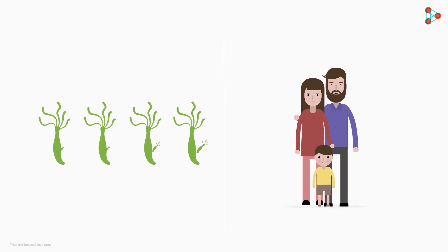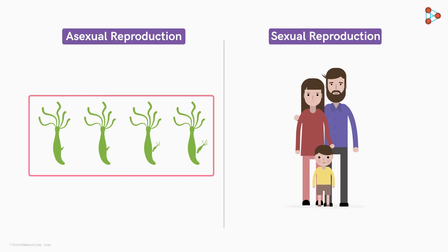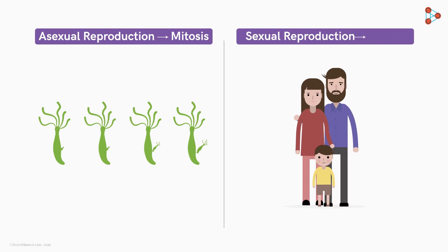All organisms add new individuals to their population by the process of reproduction. This can be done by either of two methods: asexual or sexual mode. Asexual reproduction is the preferred style of lower organisms and is performed by mitosis. Sexual reproduction is aided by meiosis.